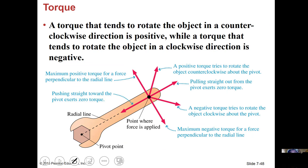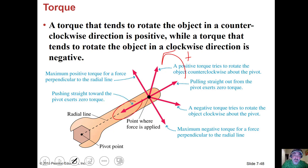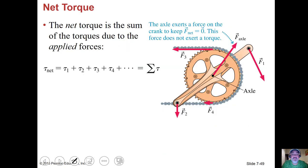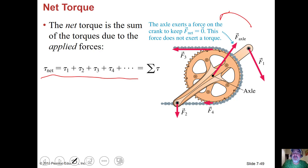A torque that tends to rotate an object counterclockwise is the positive direction. A torque that tends to rotate it clockwise is negative. Some forces provide no torque — no part of that force is perpendicular to the lever arm. The maximum torque would come from a force totally perpendicular, and the maximum negative torque would come from a perpendicular force in the negative direction. Sometimes there's more than one torque and you've got to add all the different torques together — that's the net torque.